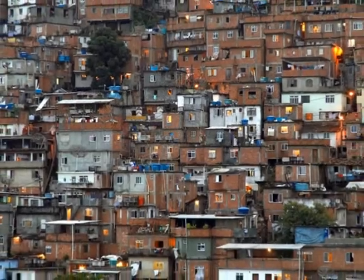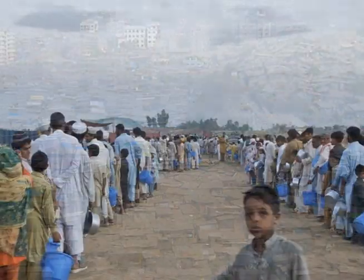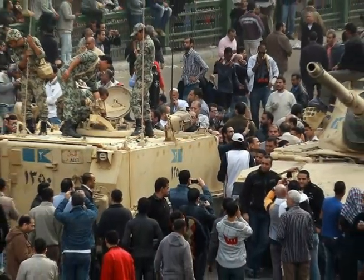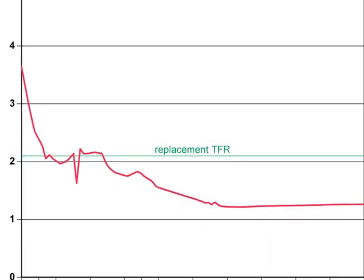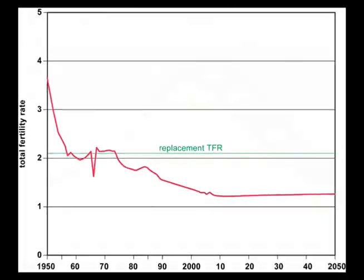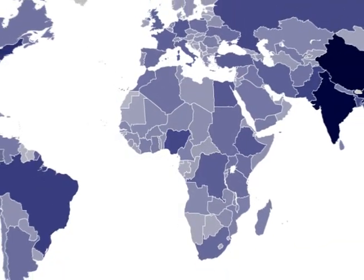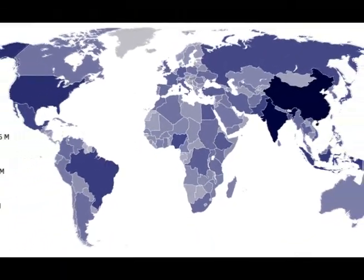A rapidly growing population can have a profound impact on a country. It might lead to starvation, economic depression, or even political instability as the government struggles to handle all the new mouths it has to feed. On the other hand, a rapidly shrinking population is a problem as well, as the population will begin to age and lack the youth needed to continue to support the country. Whether a country's population is growing or shrinking has a huge effect on the country and its development.